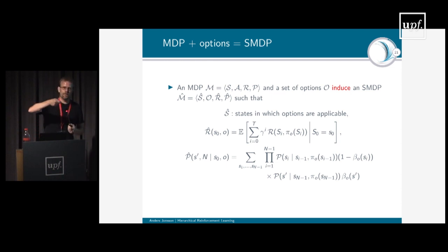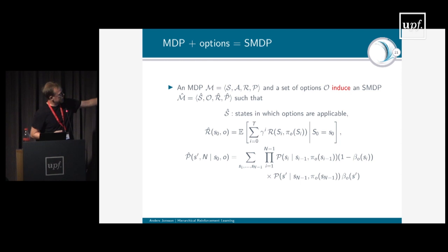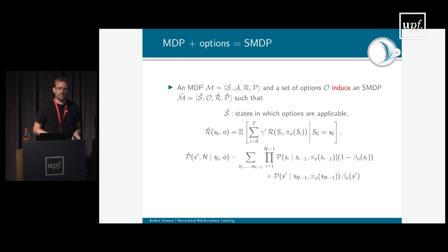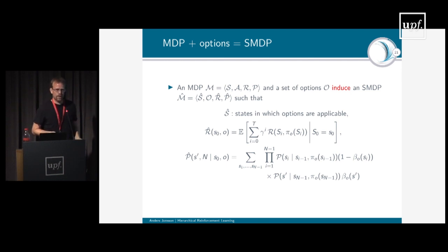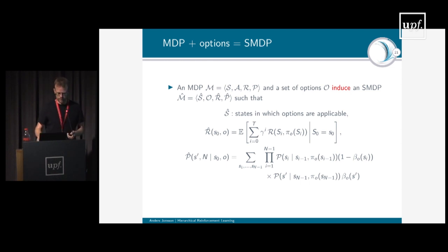All the theory so far assumes that the options are given — including the option policies. Someone tells us for all these subtasks represented by the options what the option policies should be. But what if option policies are not provided as prior information? Since a subtask is also a sequential decision process, we can simply define a local MDP for that option, and the option policy will be implicitly defined as the solution to this option MDP.